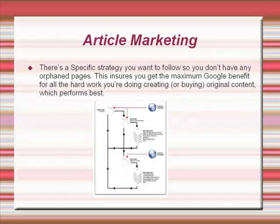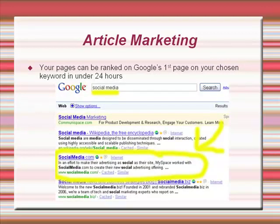There is a specific strategy you want to follow so you don't have any orphaned pages. This ensures you get the maximum Google benefit for all the hard work you're doing creating or buying original content, which does perform best. Your pages can be ranked on Google's first page for your chosen keyword in under 24 hours using these strategies and domains.